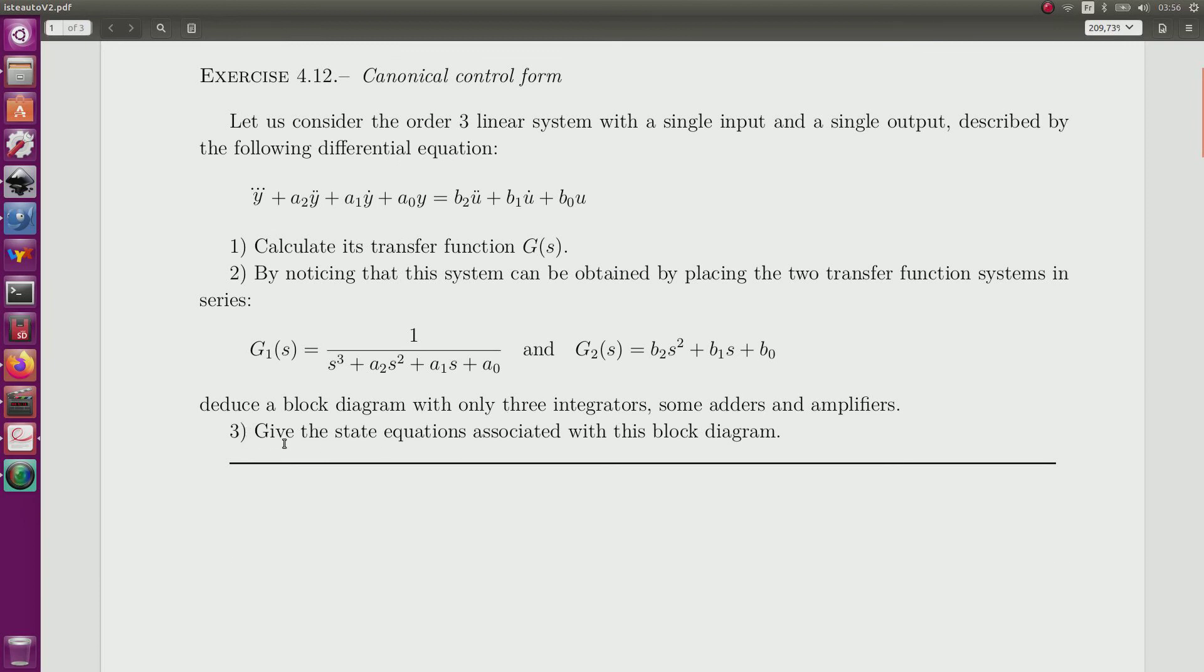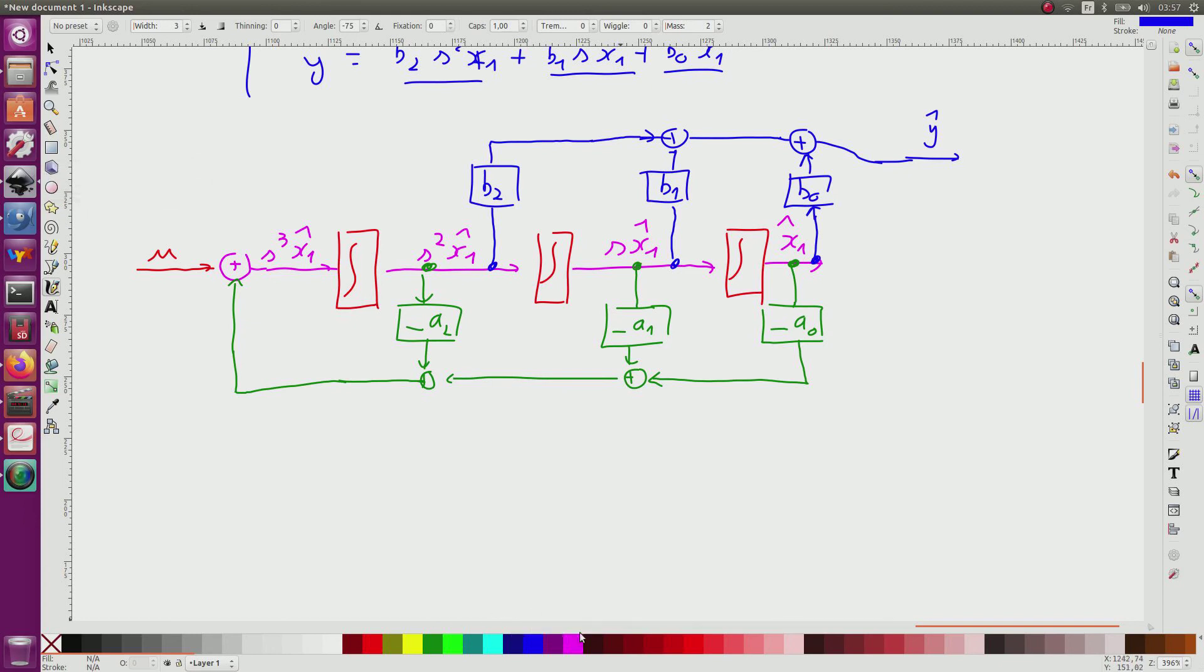Question number three: I have to give the state equation associated to this diagram. So for this I will rename. This one I will call x1. This one I will call x2. So I can remove the hat here, the hat everywhere. Everything now depends on time t.